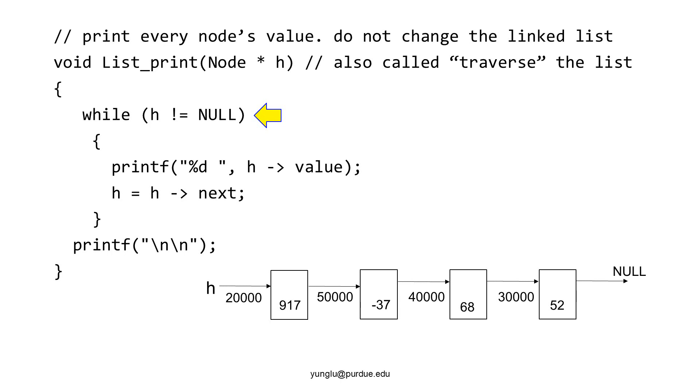As usual, we check whether h is null first. If it is not null, we can print the value. Then, h moves to the next node.